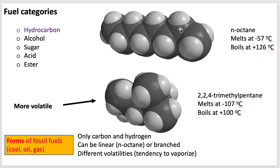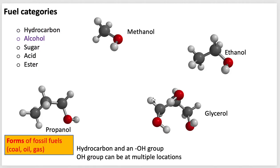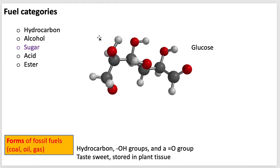Here are hydrocarbons — just carbons with hydrogens on them. They can be in a linear form or they can be branched, which makes them balled up. We talked about how when they are branched they have a higher vapor pressure and they typically melt more easily. We also talked about alcohols, which look like hydrocarbons with OH groups hung off them — and it can be multiple OHs. Sugars look like hydrocarbons with OHs, and one of the carbons that doesn't have an OH has a double bond to an oxygen. Here's glucose.